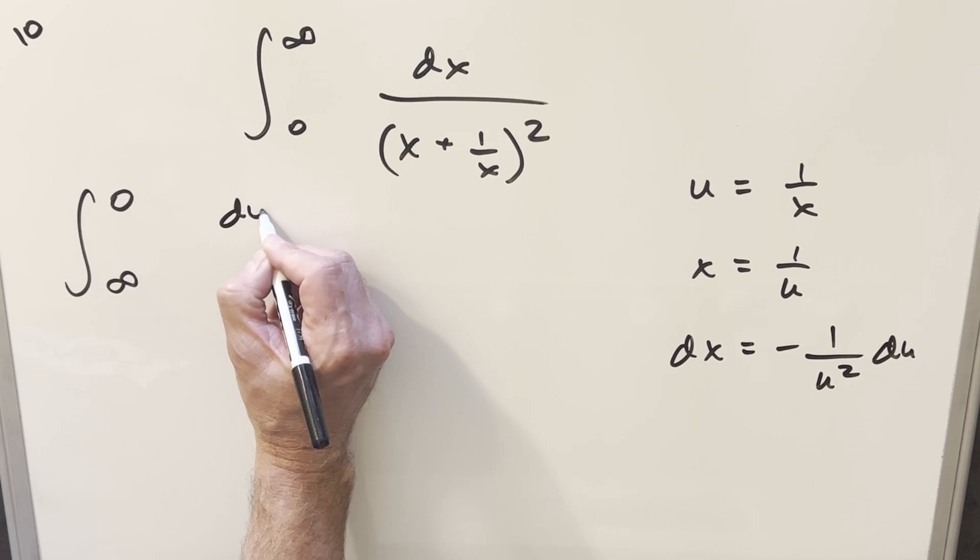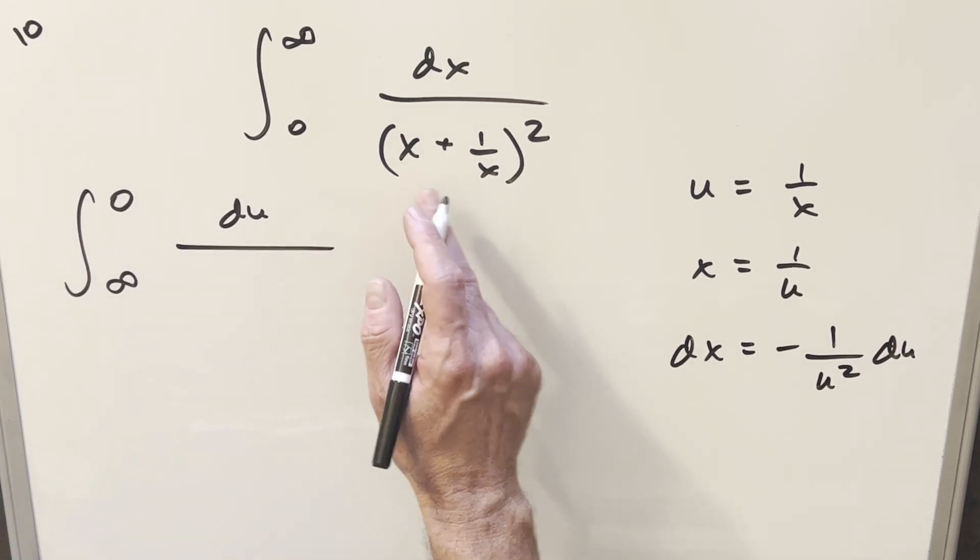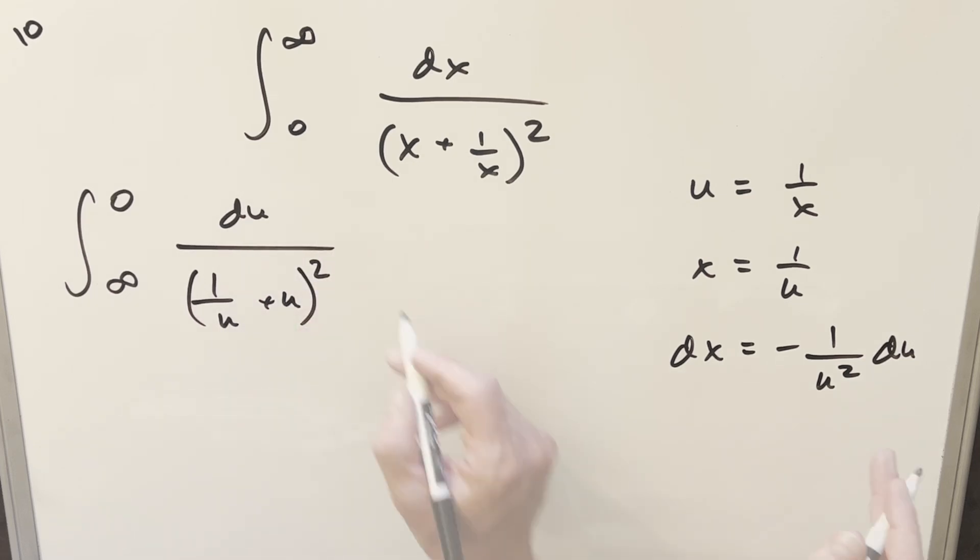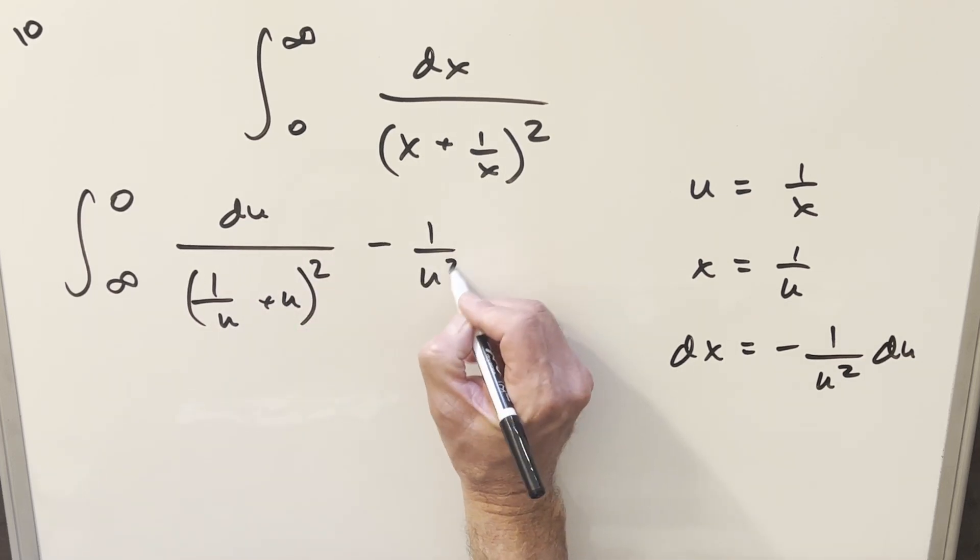let's write, I'm going to write it as a du in the numerator. This here, our x is going to become 1 over u and our 1 over x is going to become u all squared. And then we have this other part, this minus 1 over u squared here.